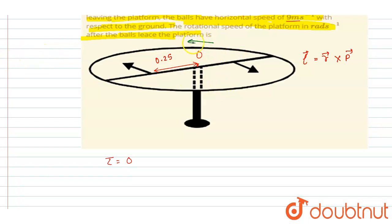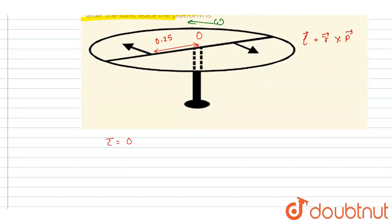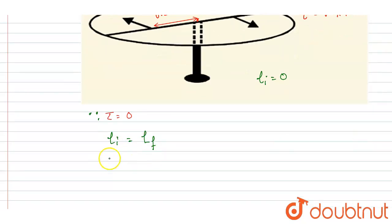So what will happen here? The disc will gain an angular speed in this direction, but still the net angular momentum will be zero because the net torque is zero. So I will write: the initial angular momentum is equal to final angular momentum.